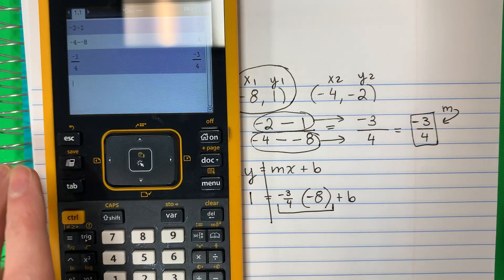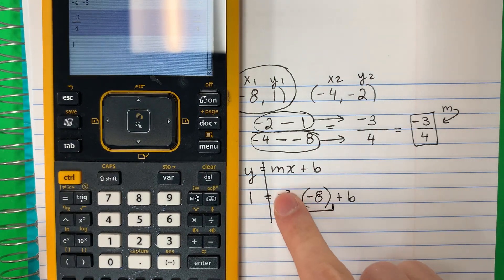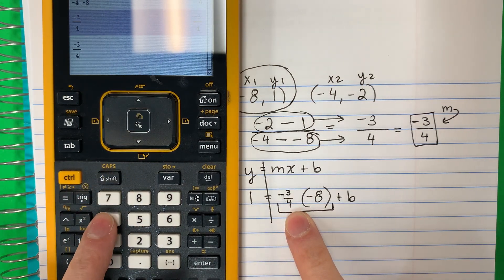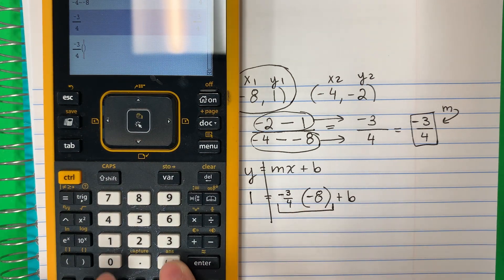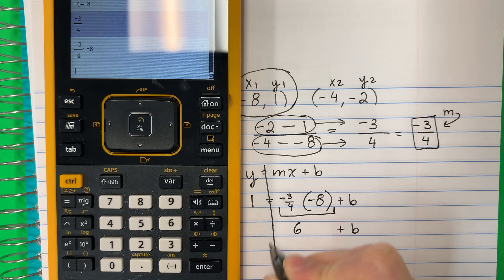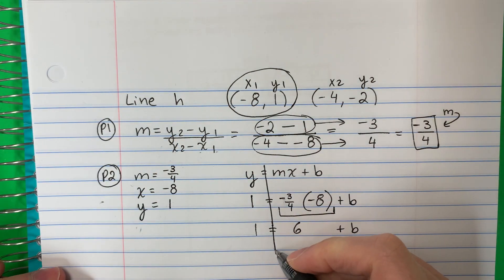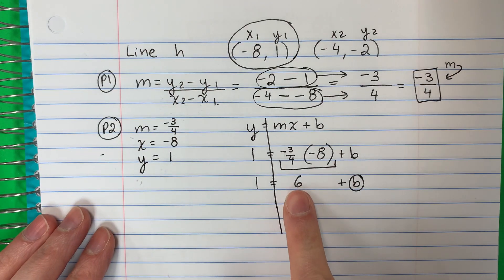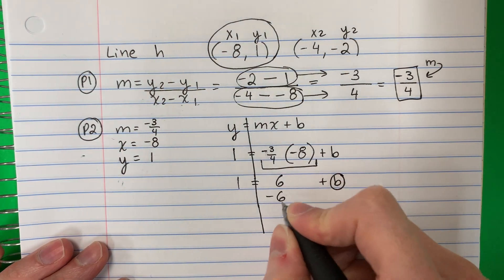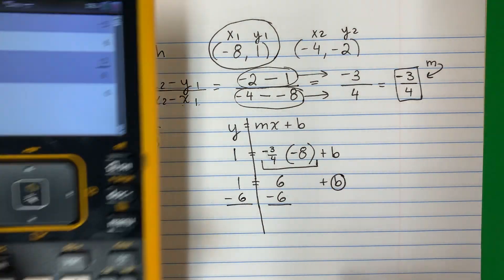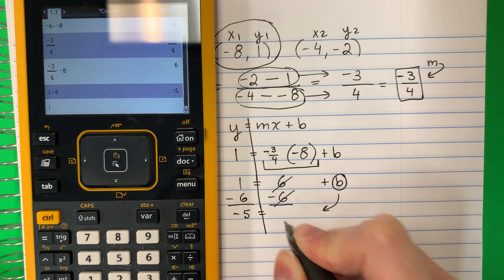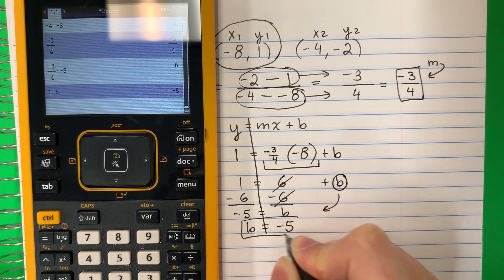So we have: six plus B equals one. B is not alone — there's a six, it's positive, so the opposite is negative. Subtract six from both sides: one minus six equals negative five. Six minus six equals zero. So B equals negative five.